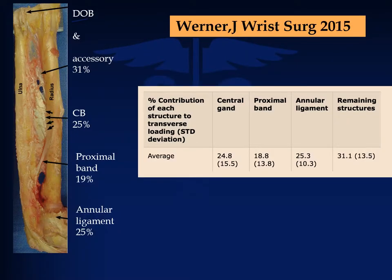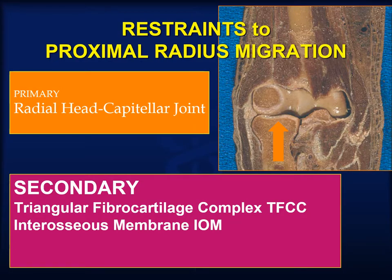Werner analyzed the respective contributions of the various components of the interosseous membrane in preventing splaying of the radius and ulna. While the central band was most important in axial longitudinal stability, it accounted for almost a quarter of transverse stability. The radial head and its contact force against the capitellum is a major restraint to axial instability. As long as it is intact and located, primary axial instability will be prevented. Once it is compromised by excision or dislocation, axial stability relies on the secondary constraints: the triangular fibrocartilage complex and the central band of the interosseous membrane.